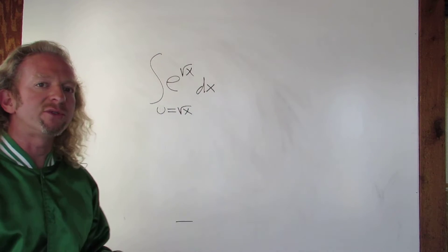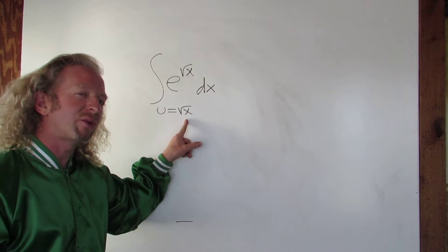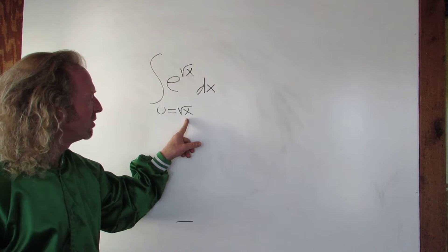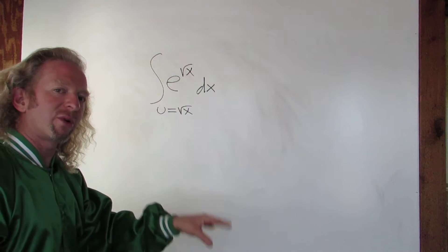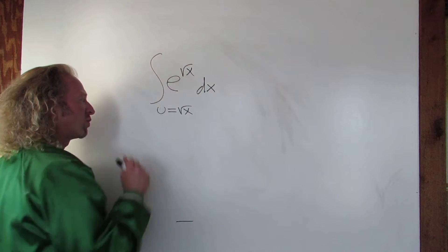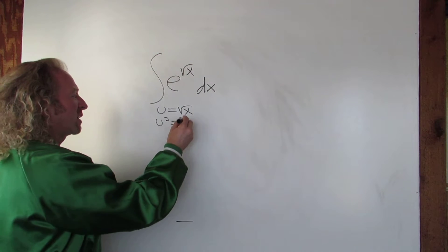The natural thing to do now is to compute du. However, the square root of x is really x to the 1 half, and so when you compute du, it's a bit messy. So it might be easier to square both sides first. If we square the left-hand side, we get u squared. When you square the square root, it goes away, so you get x.